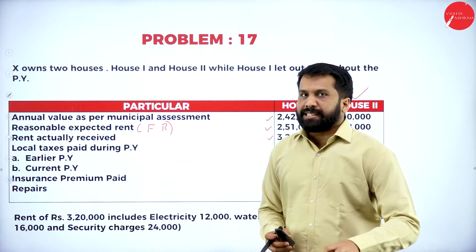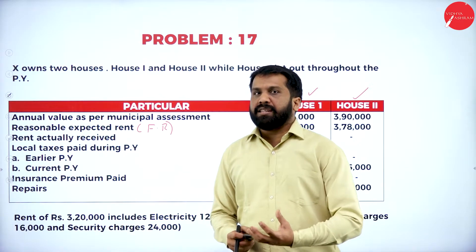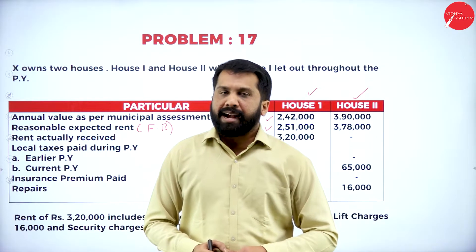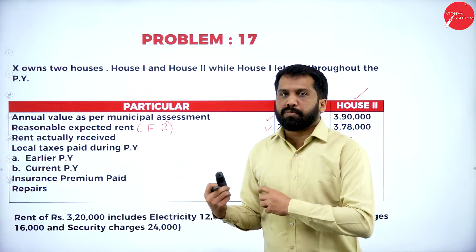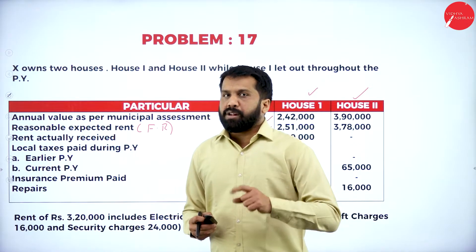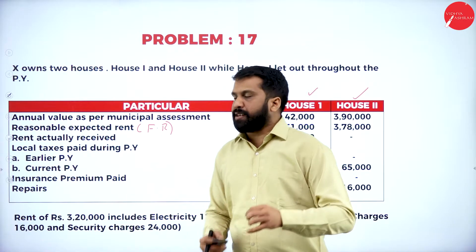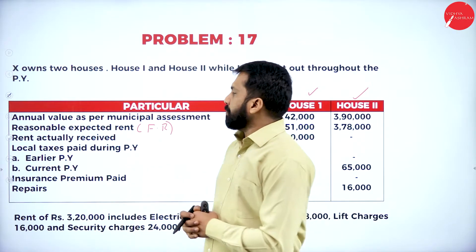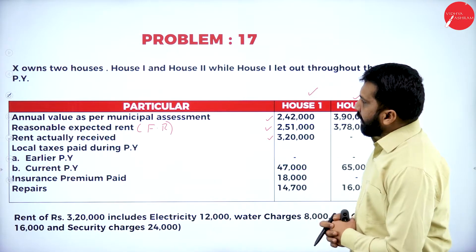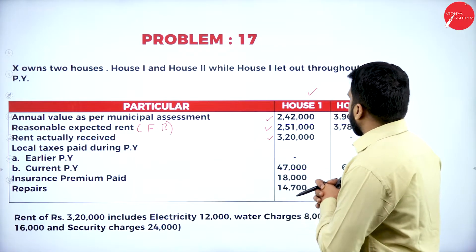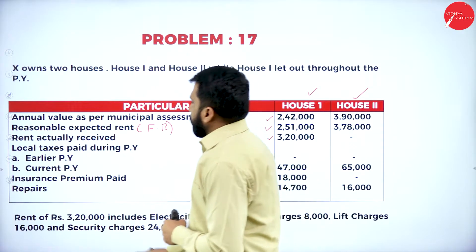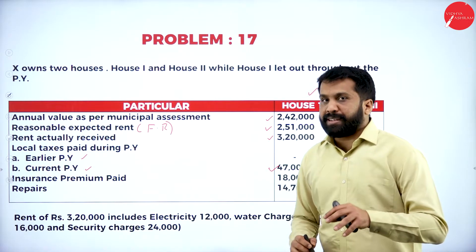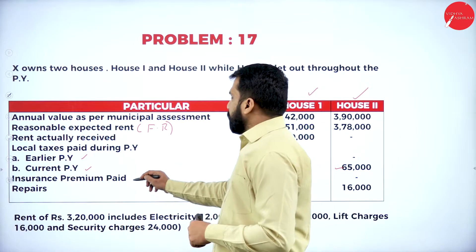Local taxes — that is, municipal taxes which are paid — may be paid in the form of last year's amount paid, next year's amount paid in advance, and the current year's local tax, all put together as part of your house property. Irrespective of the number of years, current or previous, you are supposed to consider your municipal tax. Local taxes paid during the earlier previous year is nil; the current previous year is ₹47,000.